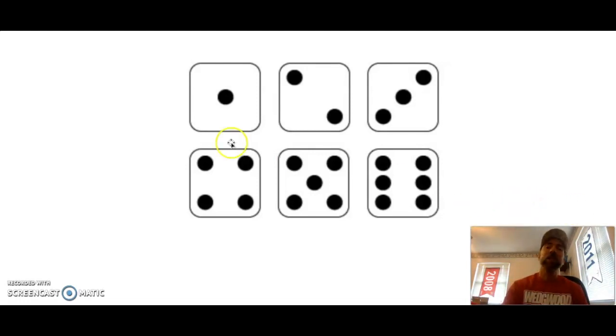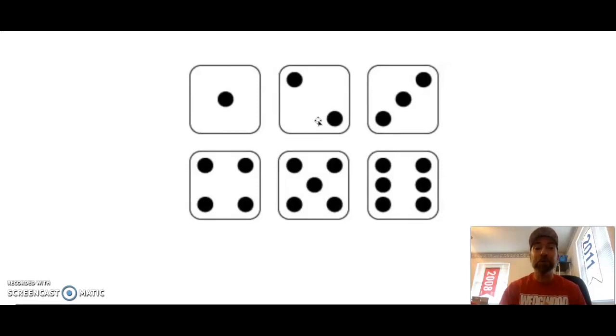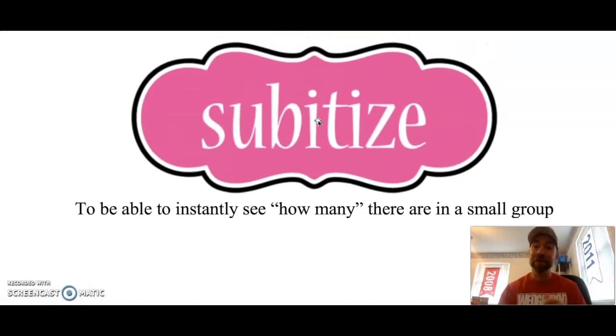For instance, just by looking at this very first die, I know there's only one dot. I didn't have to count the dots. I saw that there was one. And in my mind, I know it means one. And then we come to the next dice. The die here has two dots. I can just look at it and know it has two. I don't have to count it. Now, first graders might have to count the dots to make sure they know. But pretty soon, you're going to be able to subitize those dots.